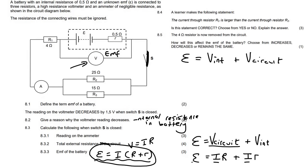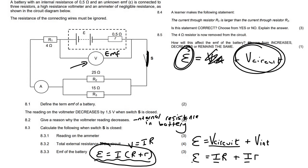In grade 10 there was no internal resistance, so when you bought a 5 volt battery you also got 5 volts on the outside. Let's move on with the question.